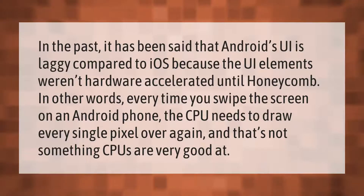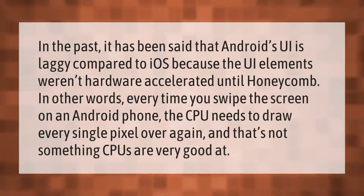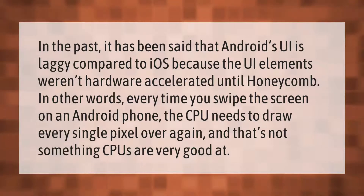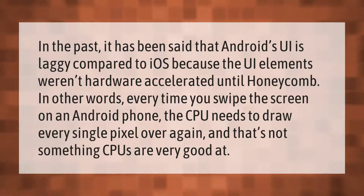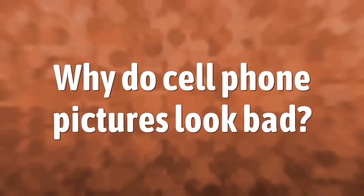In the past it has been said that Android's UI is laggy compared to iOS because the UI elements weren't hardware accelerated until Honeycomb. In other words, every time you swipe the screen on an Android phone, the CPU needs to draw every single pixel over again — and that's not something CPUs are very good at.